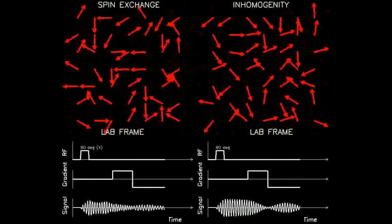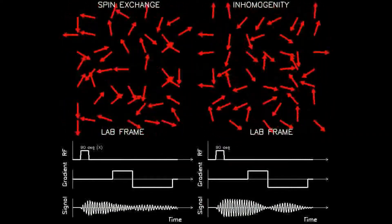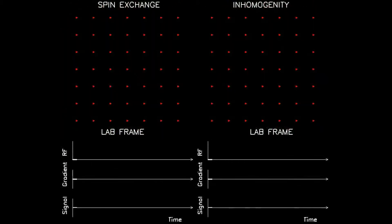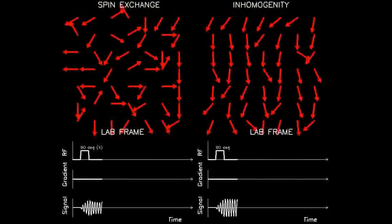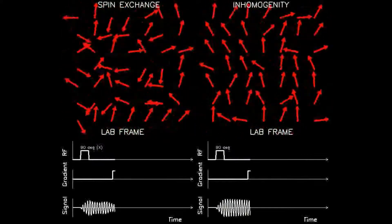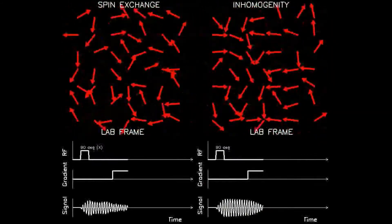Again, the top two panels show a 7x7 array of dipoles in the laboratory frame as viewed along the main magnetic axis. As in the previous example, the left side uses spin-spin dephasing, and the right side uses inhomogeneity dephasing.